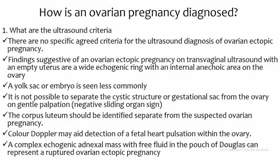How is an ovarian pregnancy diagnosed? There are no specific agreed criteria for the ultrasound diagnosis of ovarian ectopic pregnancy. Findings on transvaginal ultrasound include an empty uterus and a wide echogenic ring with an internal echogenic area on the ovary. A yolk sac or embryo is seen less commonly. It is not possible to separate the cystic structure or gestational sac from the ovary on gentle palpation. The negative sliding organ sign and color Doppler may aid detection of fetal heart pulsations in the ovary.